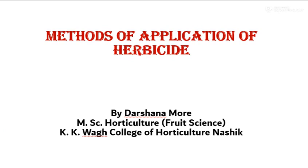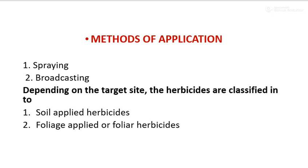In this chapter, we will see different methods of herbicide application. Methods of application: first is the herbicide applied through spraying, and second one applied through broadcasting. Depending on the target site, the herbicides are classified into two groups: first is soil applied herbicide, and second one is the foliage applied or foliar herbicide.